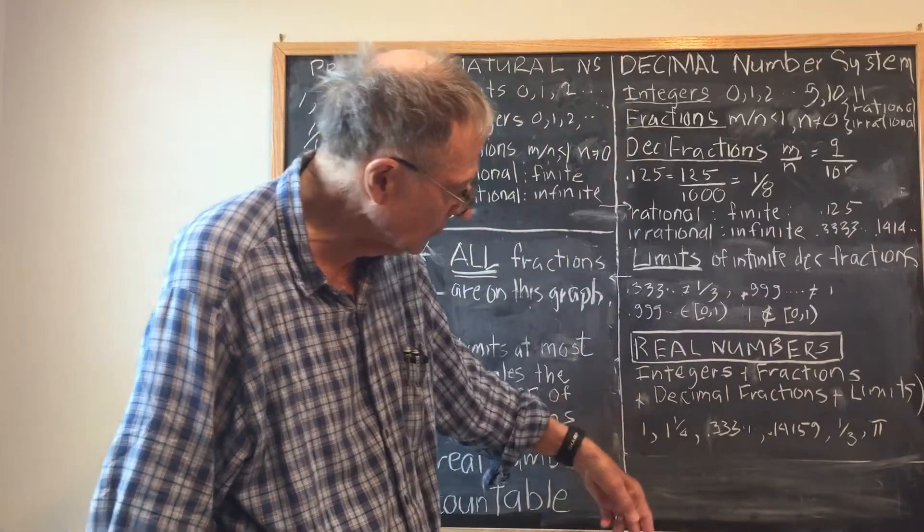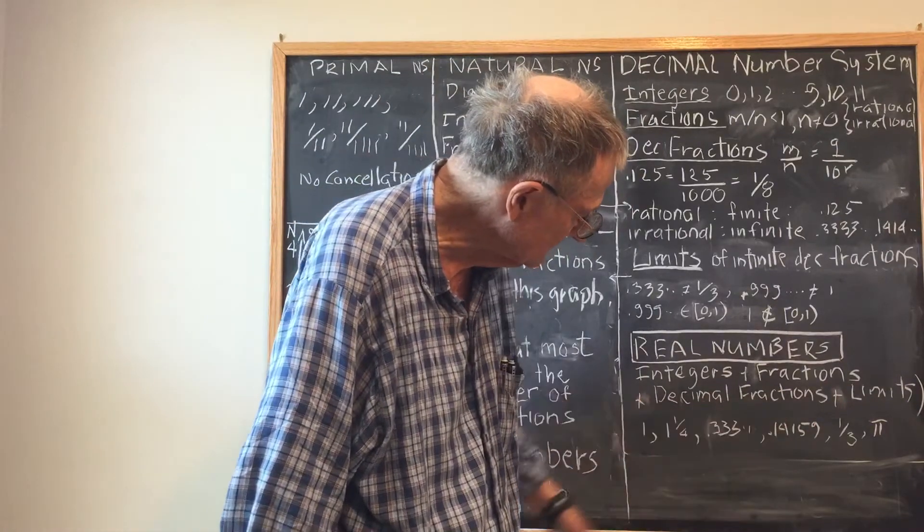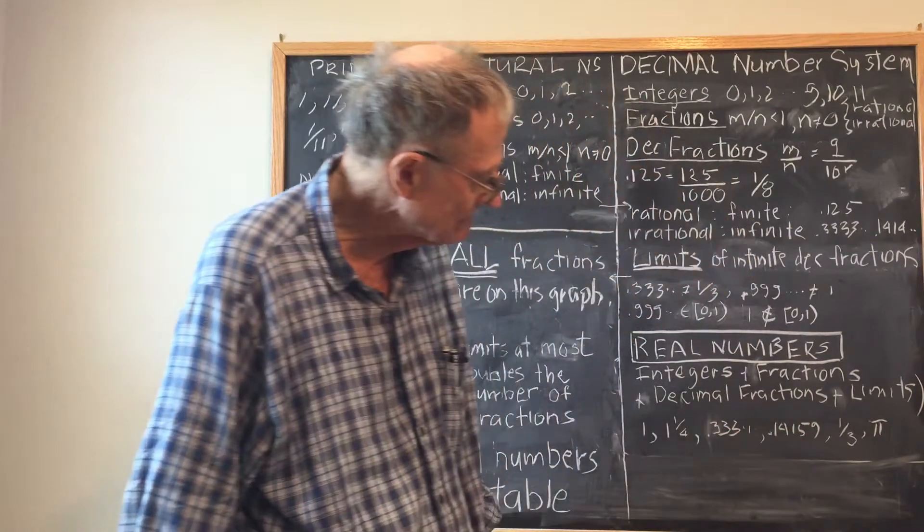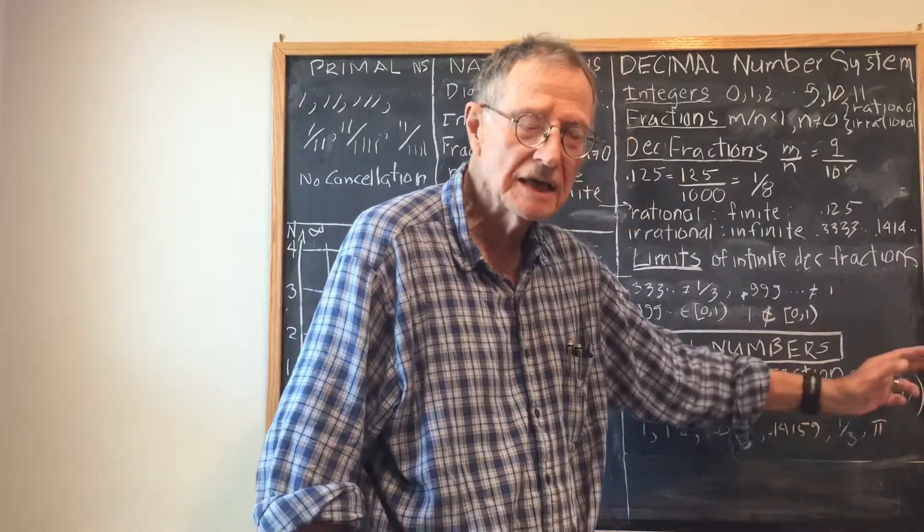For example: one, one and a quarter, 0.333 endlessly, 0.14159, one third pi, etc.